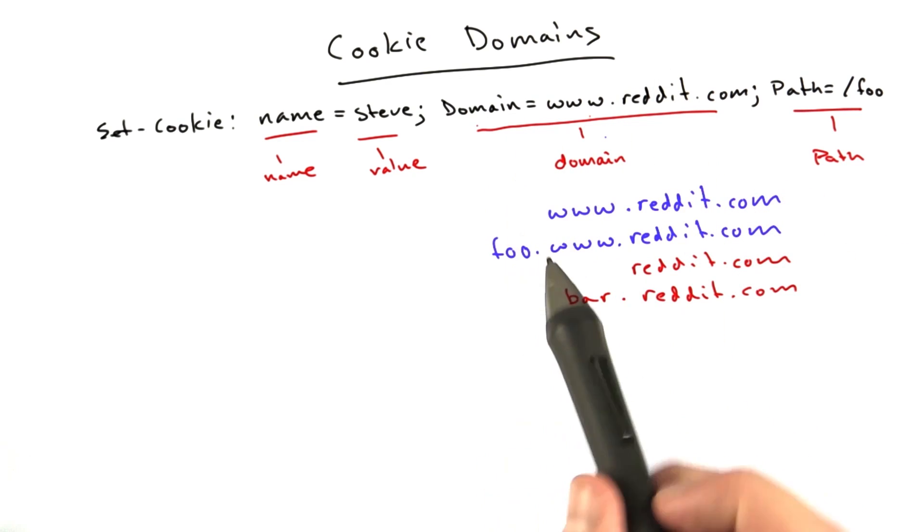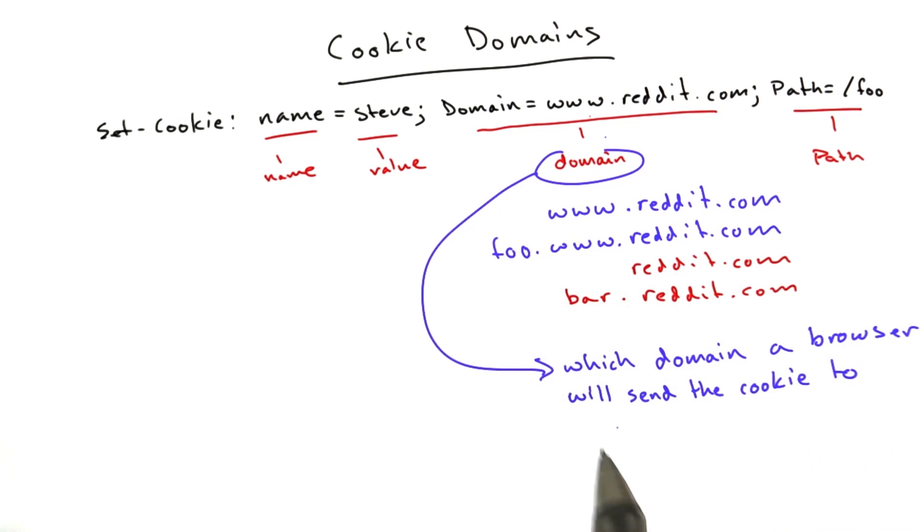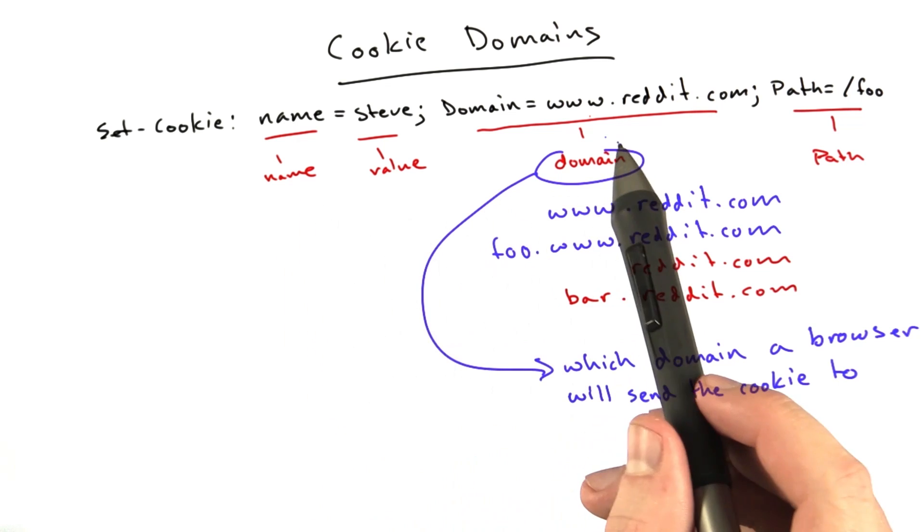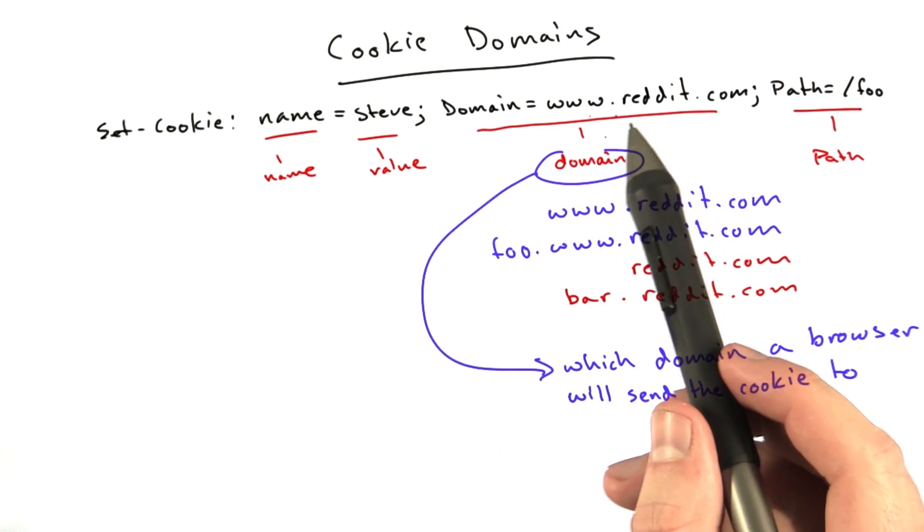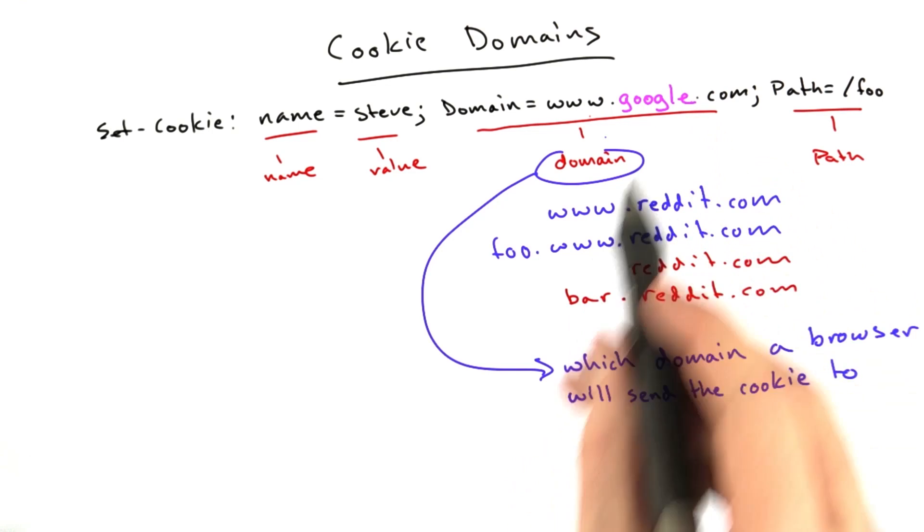The domain controls which domain a browser will send a cookie to. What about, can I have a web server at reddit.com that sets a cookie for google.com? The answer is no.